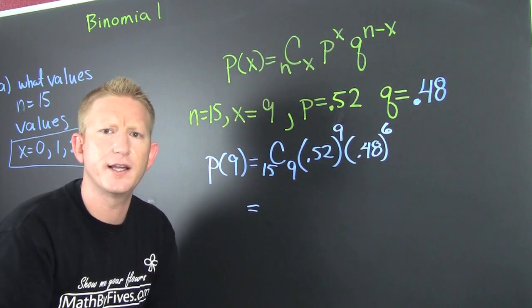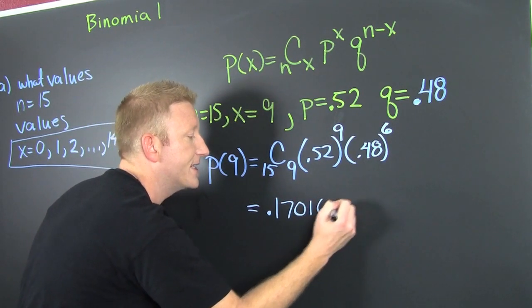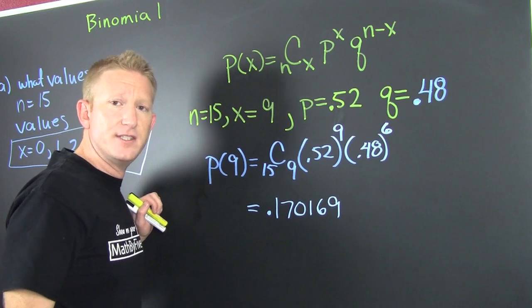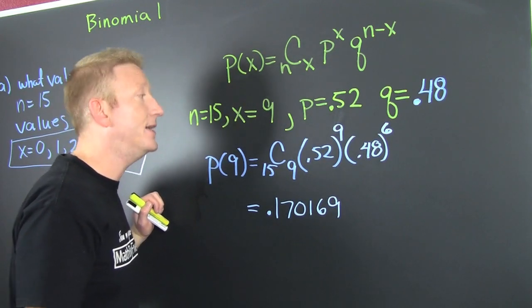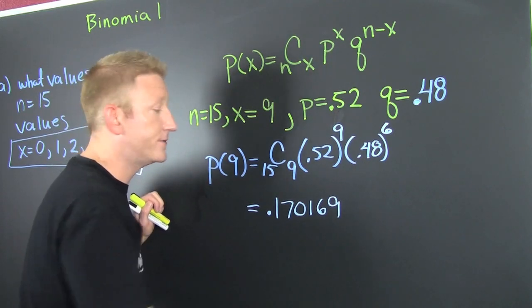So then I plug it in on my calculator and pound it out. And I find that this is 0.170169, or a 17 percent chance that exactly nine people in this sample of 15 have a Facebook account.